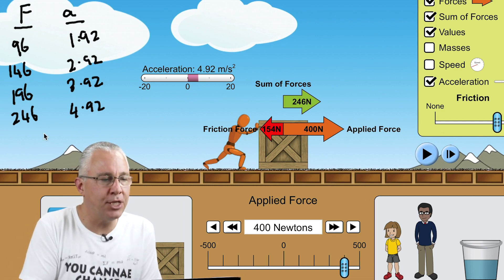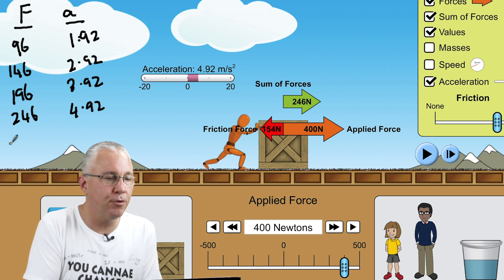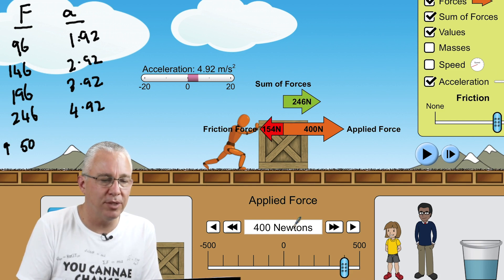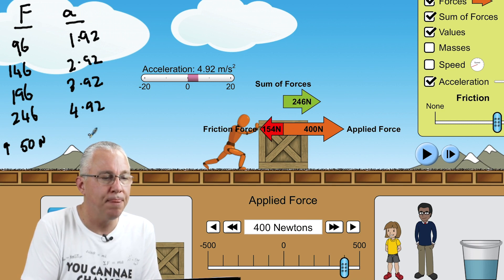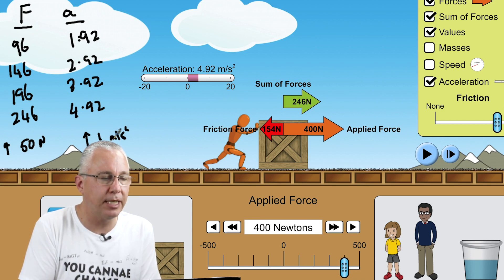Now can you see there's a relationship here going on? This section here in terms of the forces is increasing by 50 newtons, because we're doing that by the applied force and the friction doesn't change. So we're getting an increase of 50 newtons every step. Here we're getting an increase of 1 meter per second squared every step.